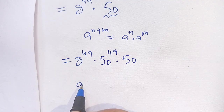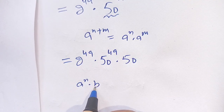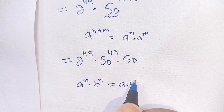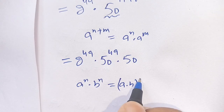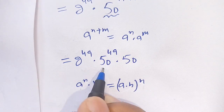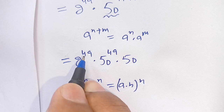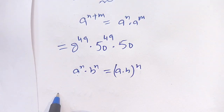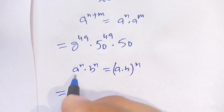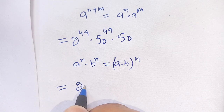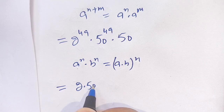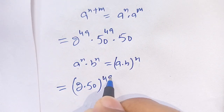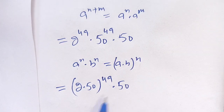Now we know that a raise to power n times b raise to power n is equal to a times b whole raise to power n. Here a is 2 and b is 50 and n is 49. Using this identity, we get 2 times 50 whole raise to power 49 times 50.